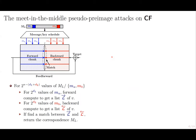In dedicated Meet-in-the-Middle attacks on the compression function, it is typically difficult to find a complete partition of the message words, so the attacker only finds two separate subsets of the message words. When all other words are fixed, one can split the computation into two chunks. Each chunk can be computed over values of one subset of the message words, independently from the other. Those message words in the subsets are called neutral words. The two chunks are typically computed forward and backward independently, and end up at a common state where their results can be pairwise matched.